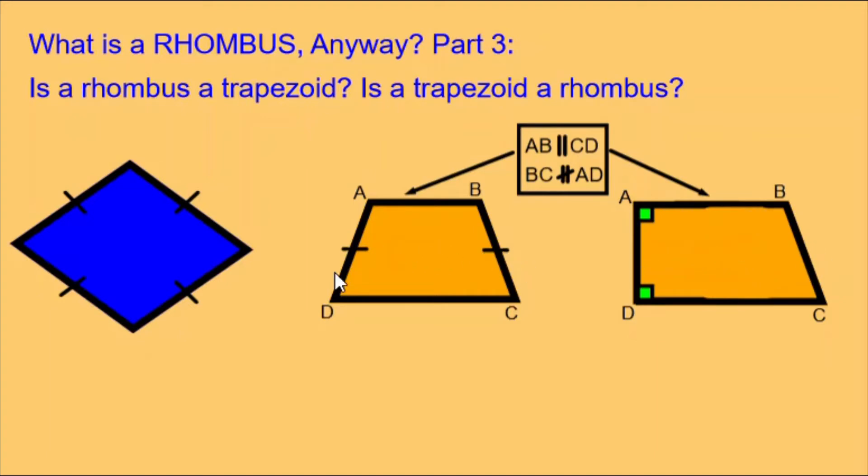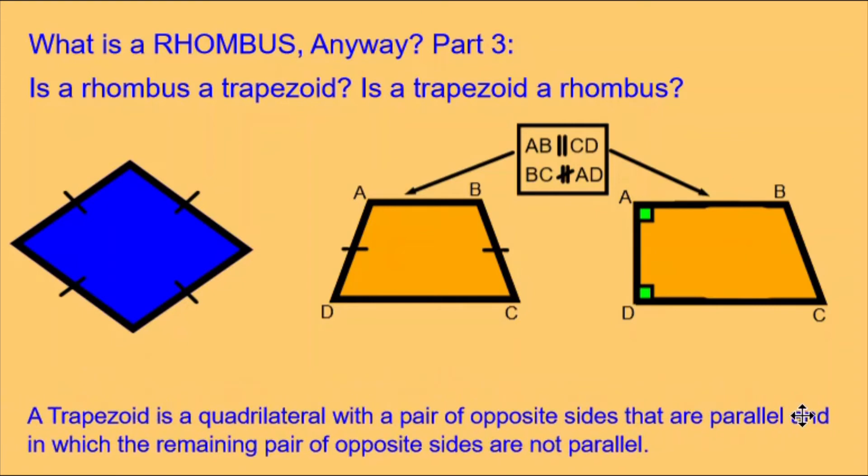Now all of this is done using the definitions for the two shapes. Let's look at those definitions. A trapezoid is a quadrilateral with a pair of opposite sides that are parallel and in which the remaining pair of opposite sides are not parallel.